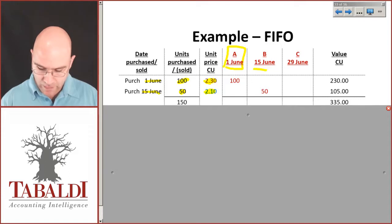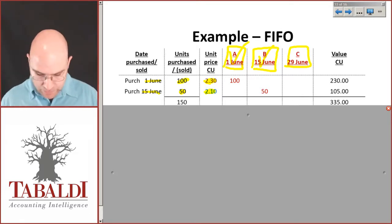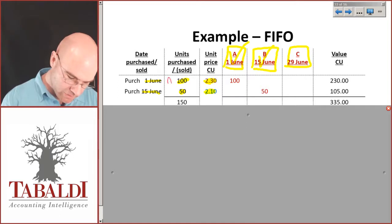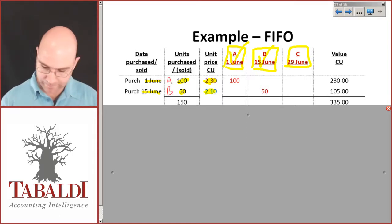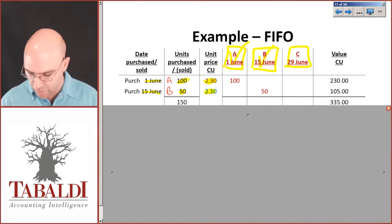So we've done A and we've done B's purchase. The value for purchase A, purchase B. Now those purchases, the 100 times 2.3 gives me a value of 230, 50 times 2.10 gives me 105. Total value of inventory is 335, total inventory units on hand is 150.